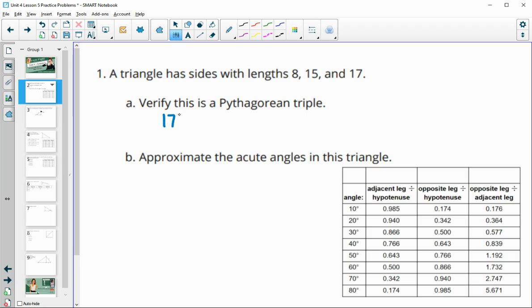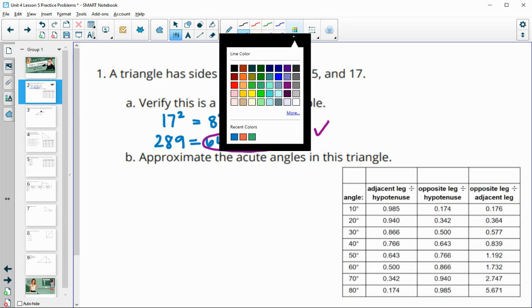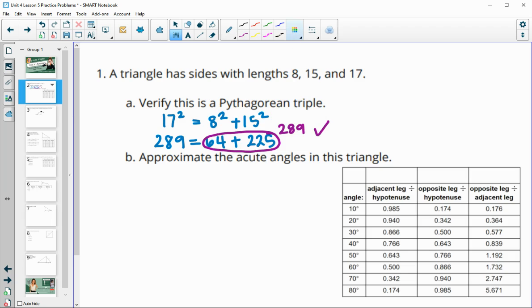But then they also satisfy the Pythagorean theorem, which is c squared equals a squared plus b squared. 17 squared is 289, 8 squared is 64, and 15 squared is 225. 64 plus 225 is 289, so 17 squared does equal 15 squared plus 8 squared. So it is a Pythagorean triple.